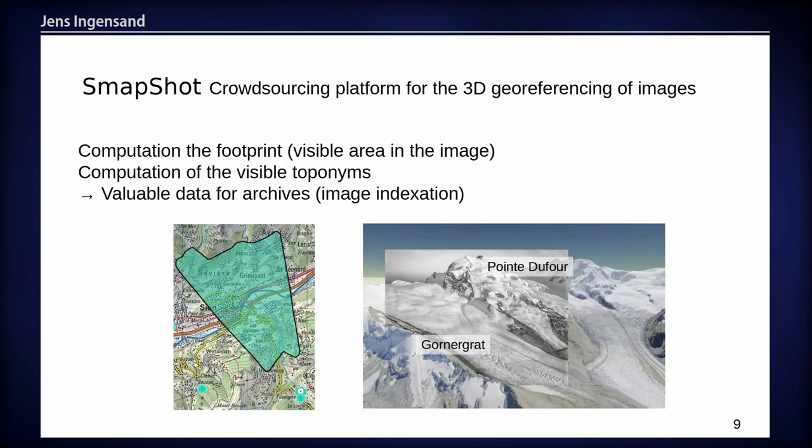Based on that, we can further explore the data once the picture has been geolocalized. For example, we are able to compute its footprint — the ground border, the projection of the border of the image on the ground — which is useful for computing other metadata and extracting, for example, place names. You can then use these as an index tool for searching images from certain mountains or rivers that you are interested in for such studies.